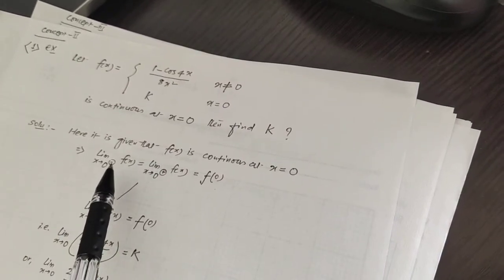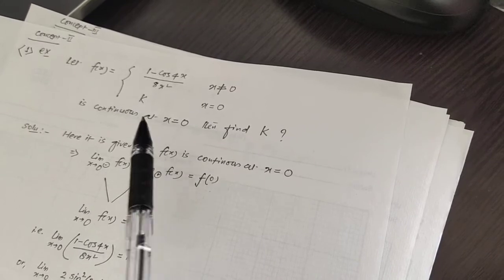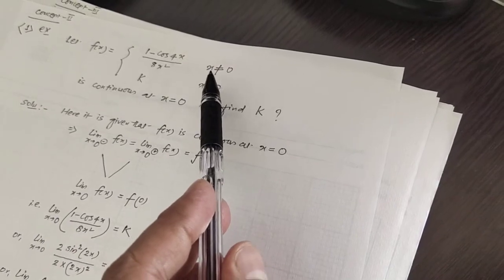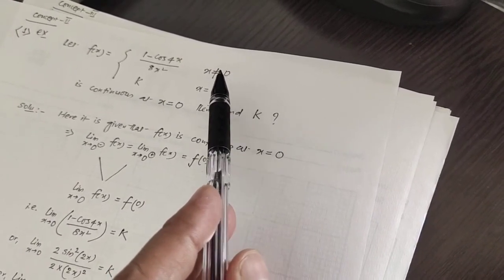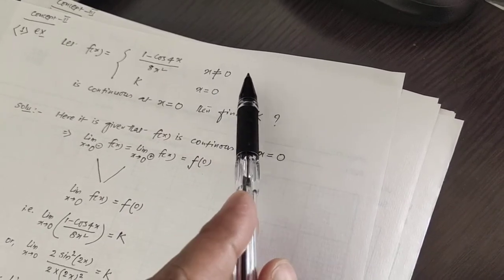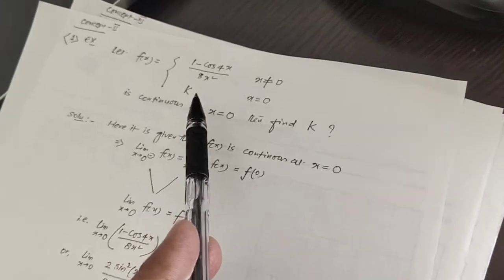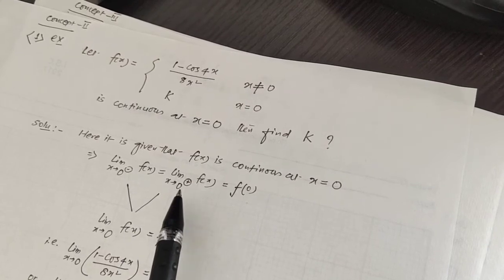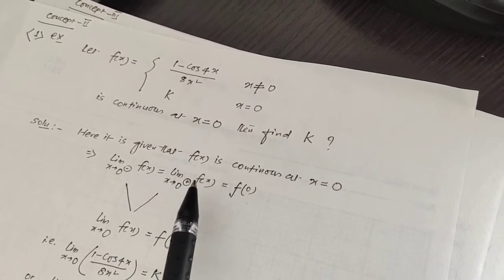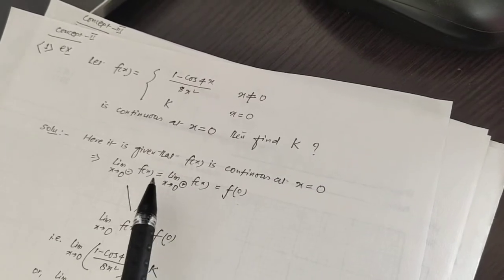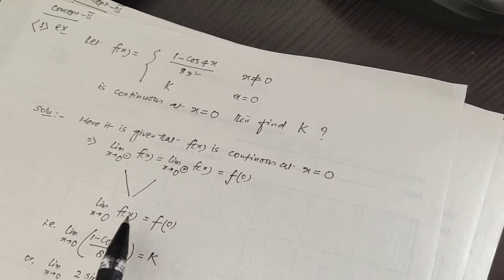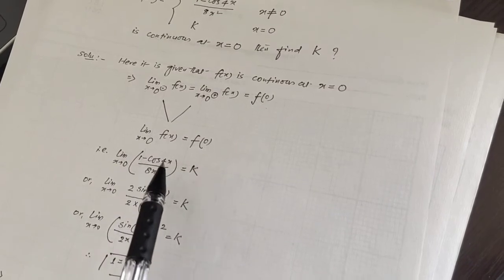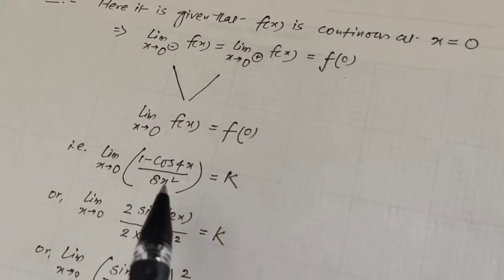Here, 0 minus means something less than 0 and 0 plus means something greater than 0. In both cases x is not equal to 0, so we consider the same branch of the function for both left and right limits. Since both cases use the same function, we can merge them into a single limit: limit x tends to 0 of f(x) equals f(0), which gives us limit x tends to 0 of (1 minus cos 4x) divided by 8x squared equals k.